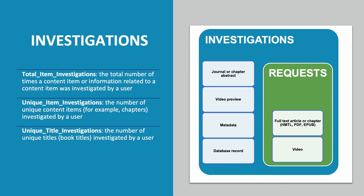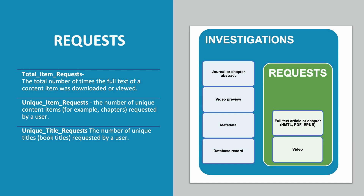Note that this metric applies to book usage and not to journal usage. There are also three request metrics. Total item requests is the total number of times the full text of a content item was downloaded or viewed, or a full video record was viewed. Unique item requests is the number of unique content items requested by a user. And unique title requests is the number of unique book titles requested by a user. This metric applies only to book usage and not to journals.